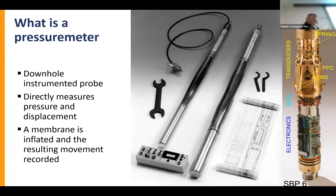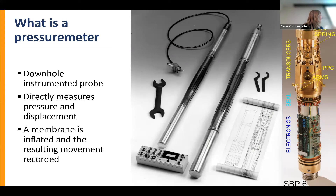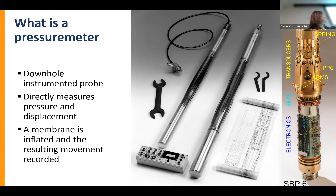In the simplest sense, a pressuremeter is a downhole instrumented probe that directly measures pressure and displacement. There's a flexible membrane covering the instrument, inflated with compressed air, and the resulting movements are recorded. The picture of the probe without the membrane shows the arms which, in a direct strain pressuremeter, measure displacement. The total pressure cell is all downhole measuring pressure, so all the electronics are downhole with a seal keeping pressure out of the electronic zone.